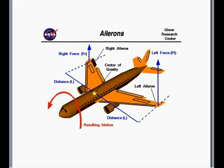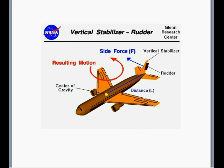Covering pitch and roll axes, the last axis is the directional or yaw axis, controlled by the rudder. Here we have a left rudder input. The vertical stabilizer inherently stabilizes directional control, but when the rudder deflects to the left, it causes a force on the tail to the right, causing the nose to move to the left. This is just like a boat rudder, except you're using the fluid of air rather than water.